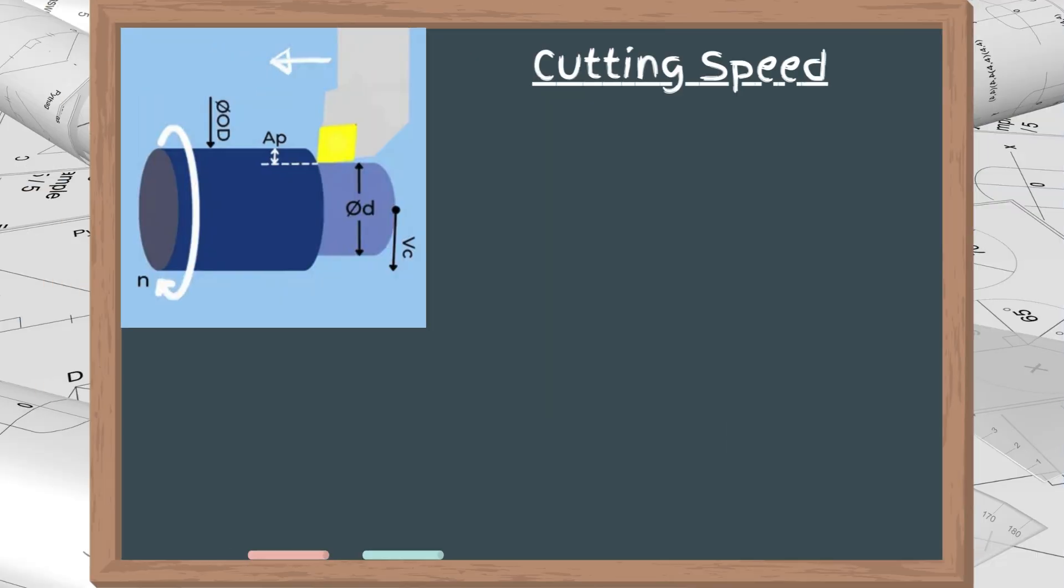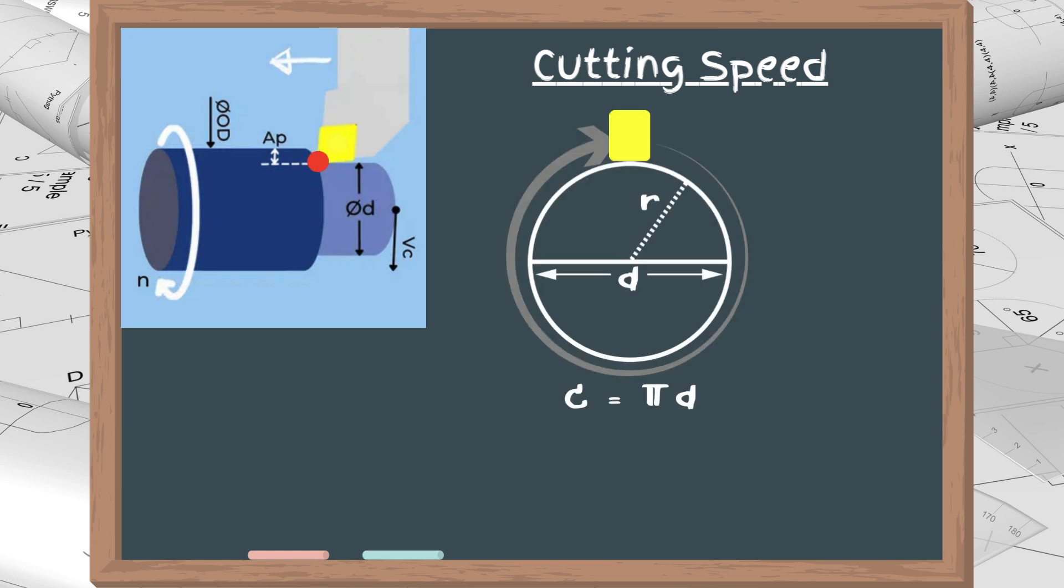Let's start with cutting speed. Cutting speed is the relative linear velocity between the tip of the turning insert and the workpiece. It is the product of the rotation speed of the workpiece, which is the spindle speed, by the circumference at the insert's tip. Since the circumference equals pi times the diameter, the formula for Vc is n times pi times d.